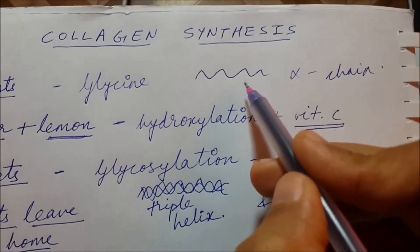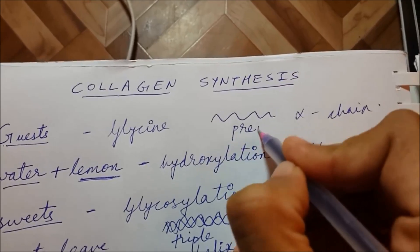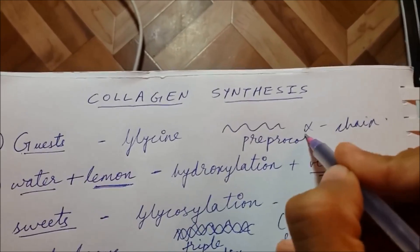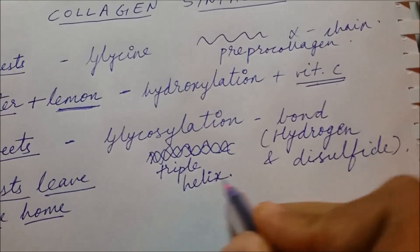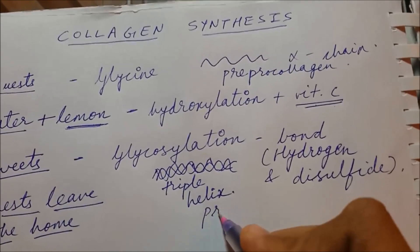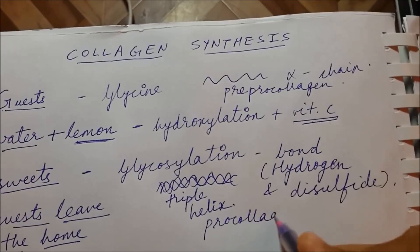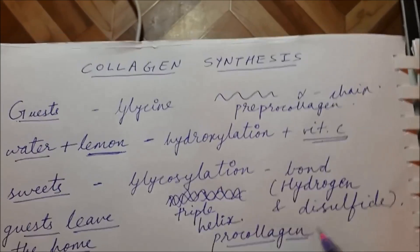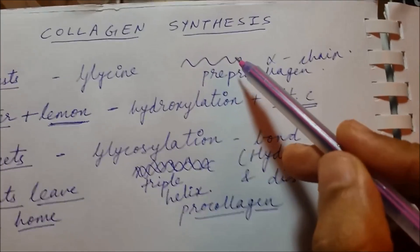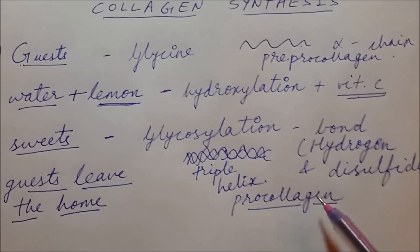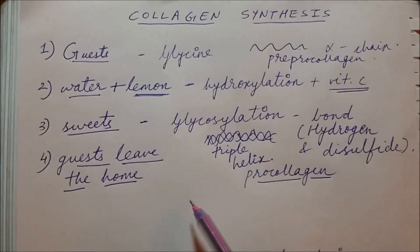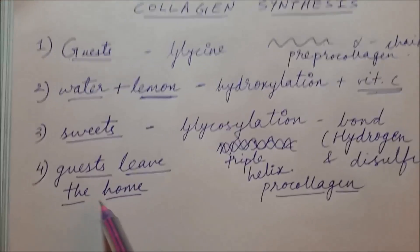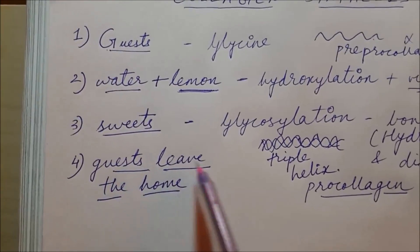The single chain is called an alpha chain, and this form is called pre-procollagen. When three chains come together to form a triple helix, it is called procollagen. So the difference is: pre-procollagen has a single chain, while procollagen has a triple helix.